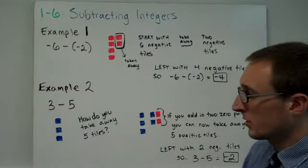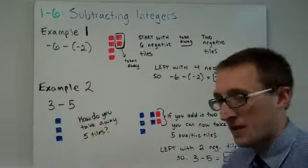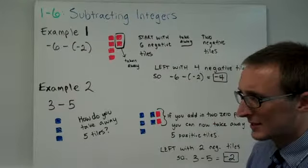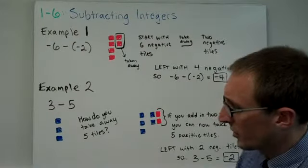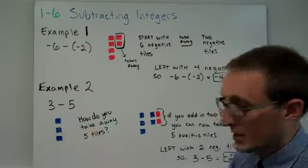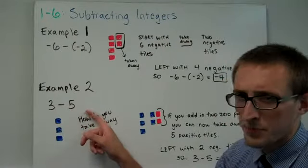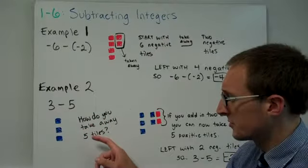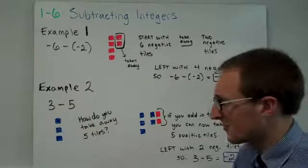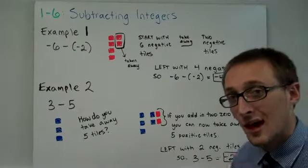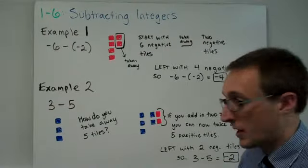Now, let's look at a different example. Example 2. 3 minus 5. It seems easy, but if I want you to represent this with tiles, it's kind of like, ugh. What does this mean? Well, it means we start with 3 positive tiles, and we want to take away 5 positive tiles. Well, how do you take away 5 positive tiles? There's only 3 of them. So where am I going to get the other 2 from? That's where 0 pairs can help out.